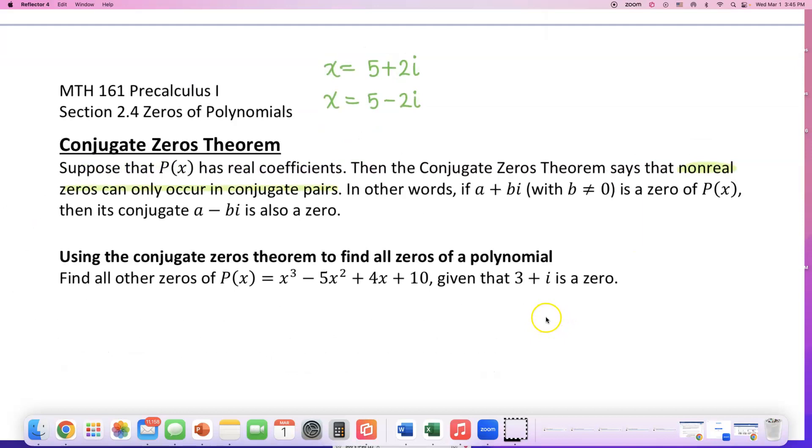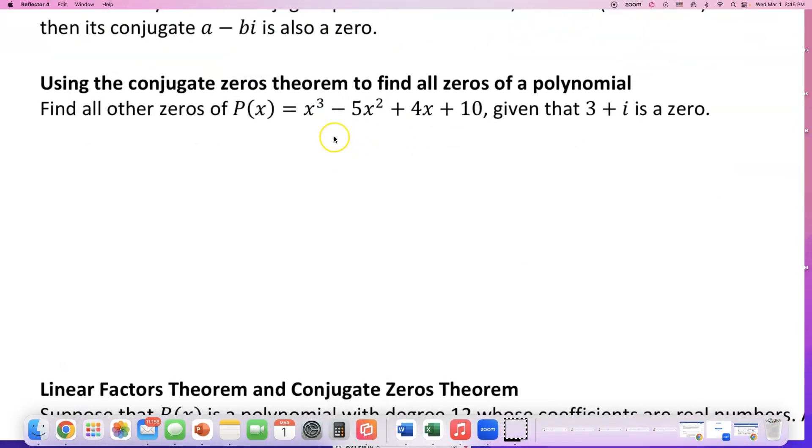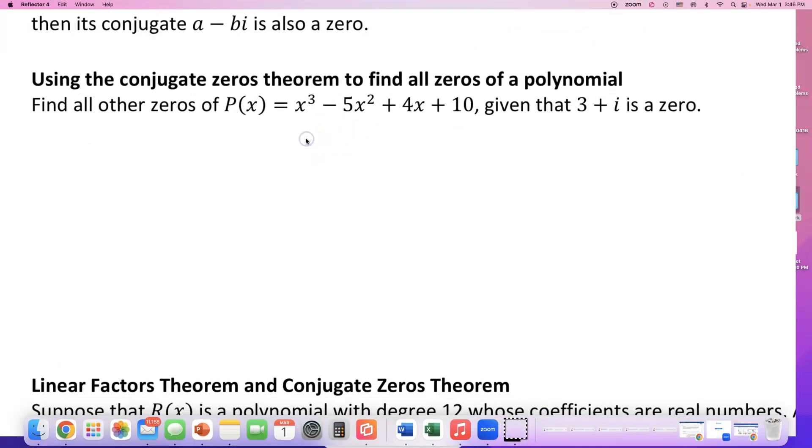So if you can write conjugate pairs, and one of them is a zero of that polynomial, its pair must be a zero too. Using that conjugate zeros theorem, that imaginary zeros always come in pairs, I want to talk about how we can solve this one using a little shortcut.